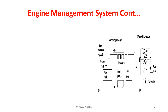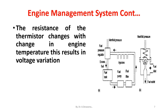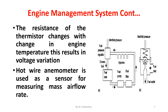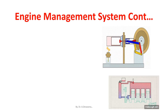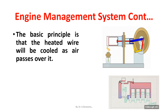The resistance of the thermistor changes with the change in engine temperature, resulting in voltage variation. A hot wire anemometer is used as a sensor for measuring mass air flow rate. The basic principle is that the heated wire will be cooled as air passes over it, and the amount of cooling depends on the mass rate of flow.